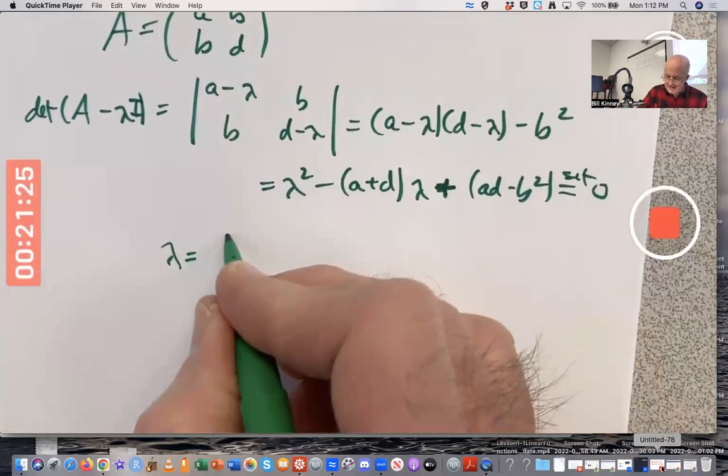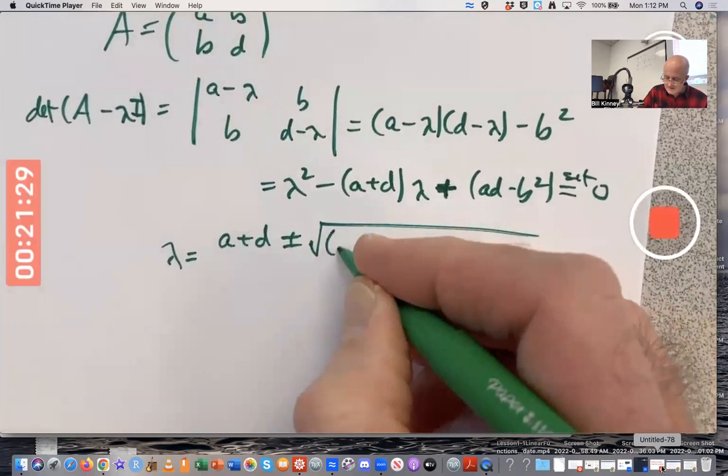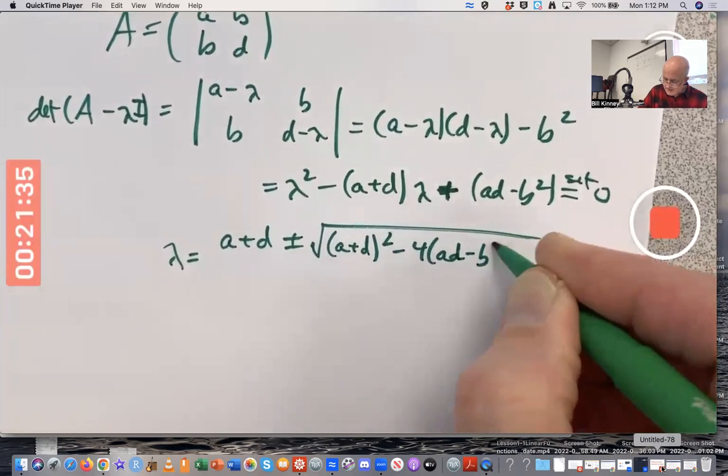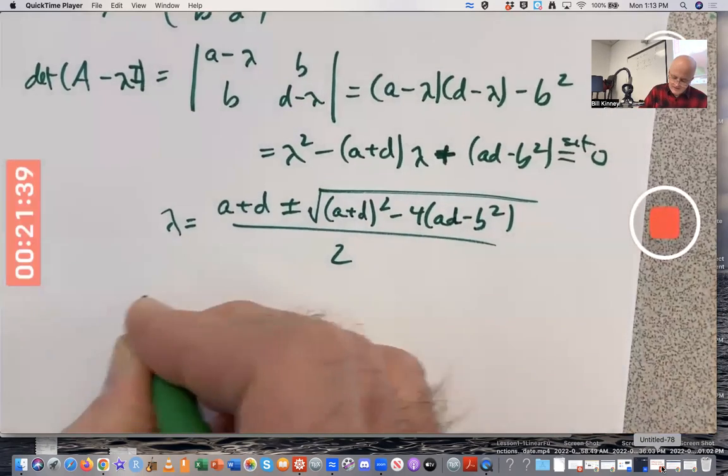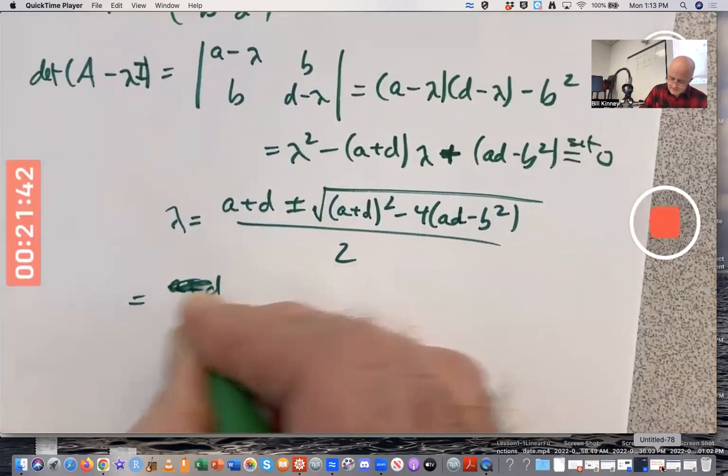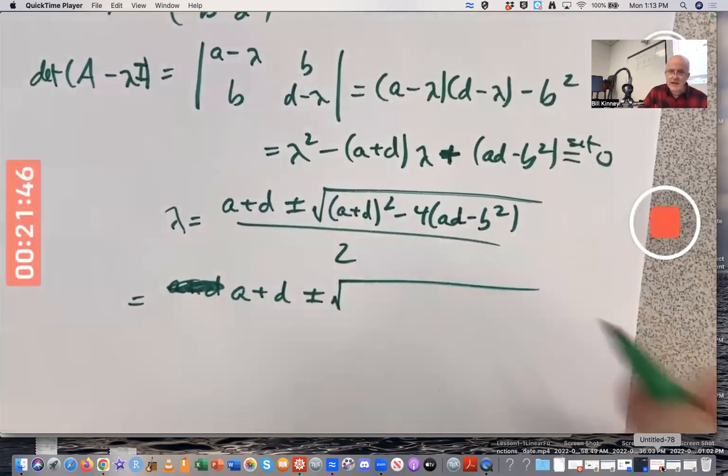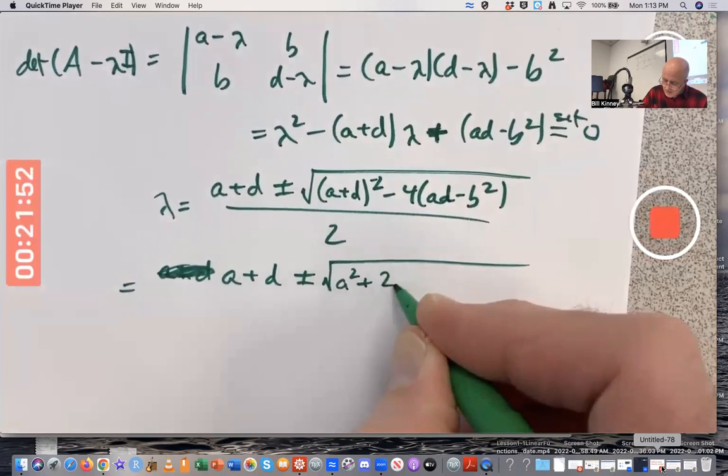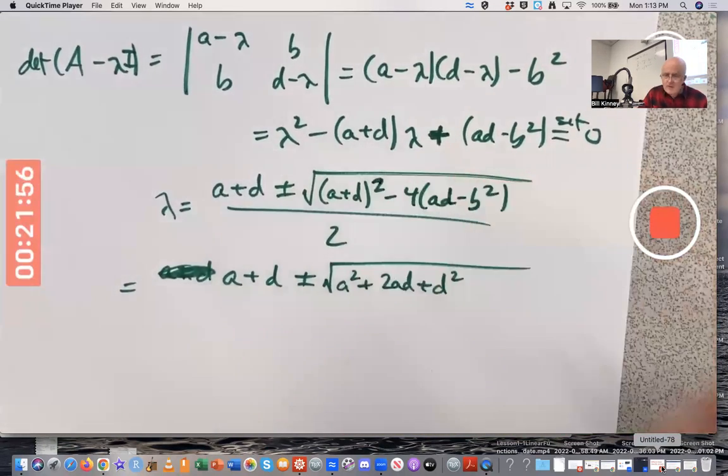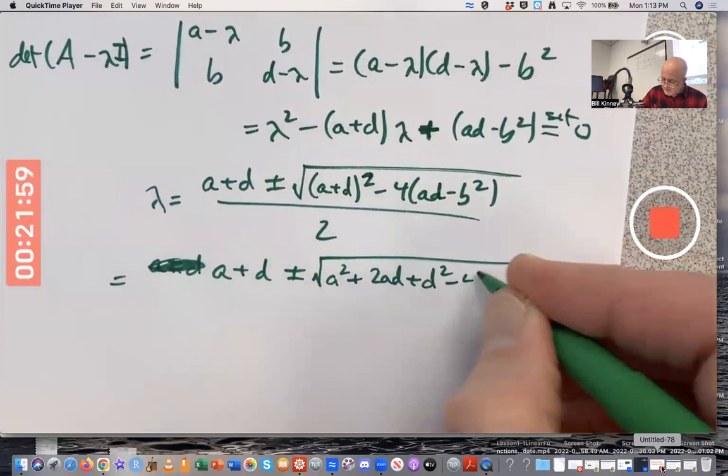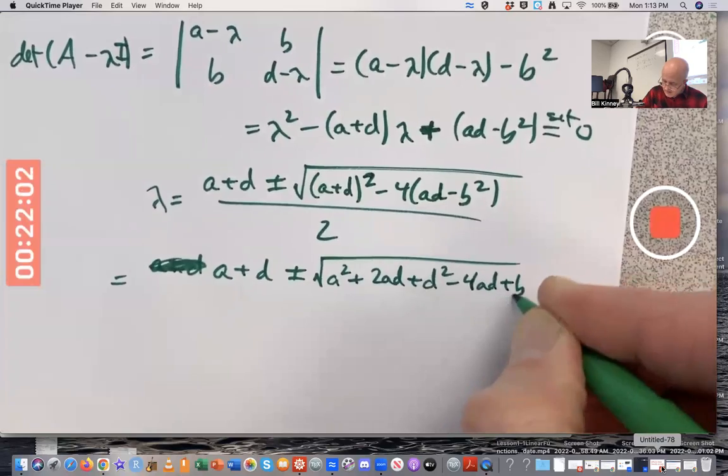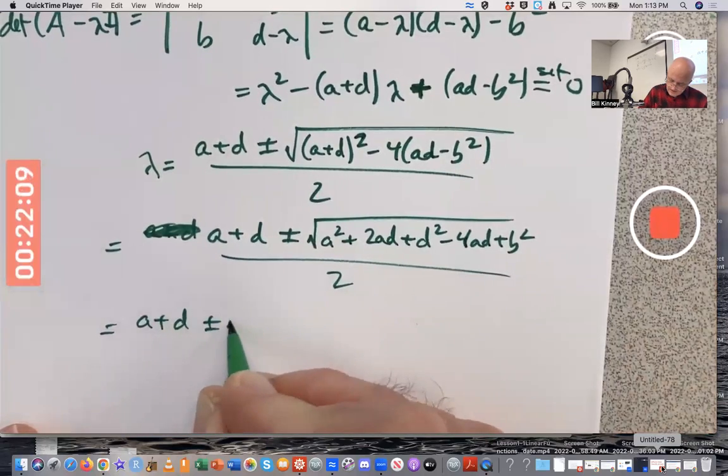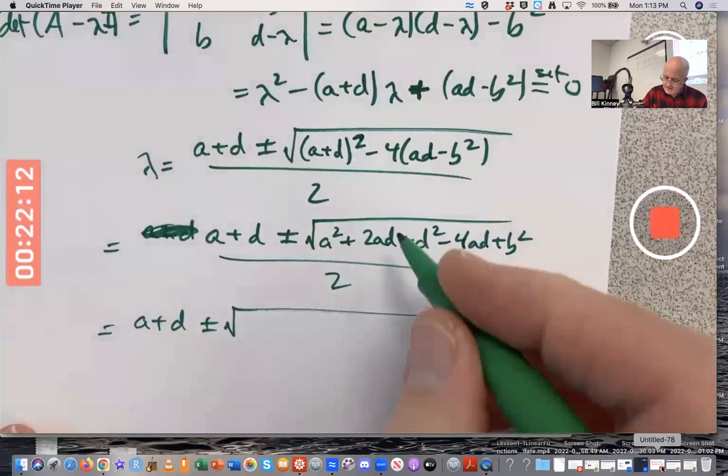Careful, you'd get positive A plus D here. It's not looking too pleasant, but I think something nice will happen if we simplify it. A plus D plus or minus square root. Okay, just expand it out and simplify. Here we get A squared plus 2AD plus D squared. Distribute the minus 4 through, get minus 4AD plus B squared.